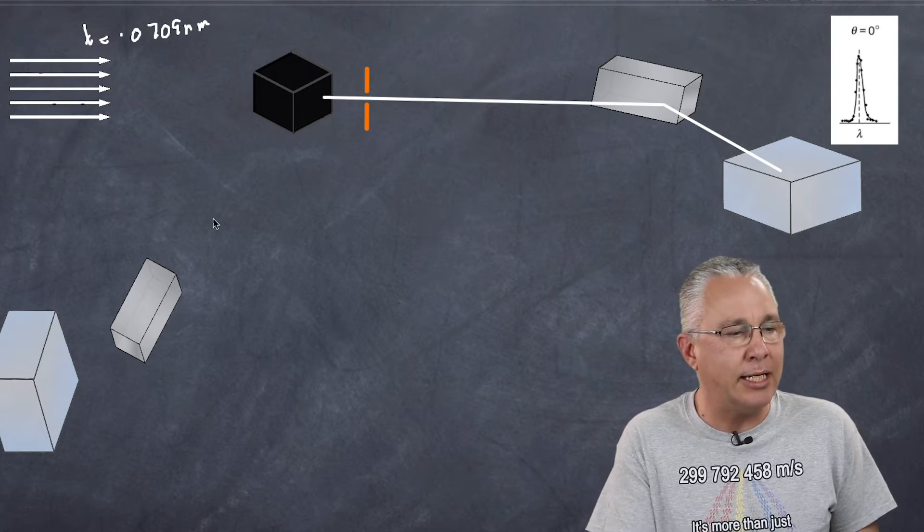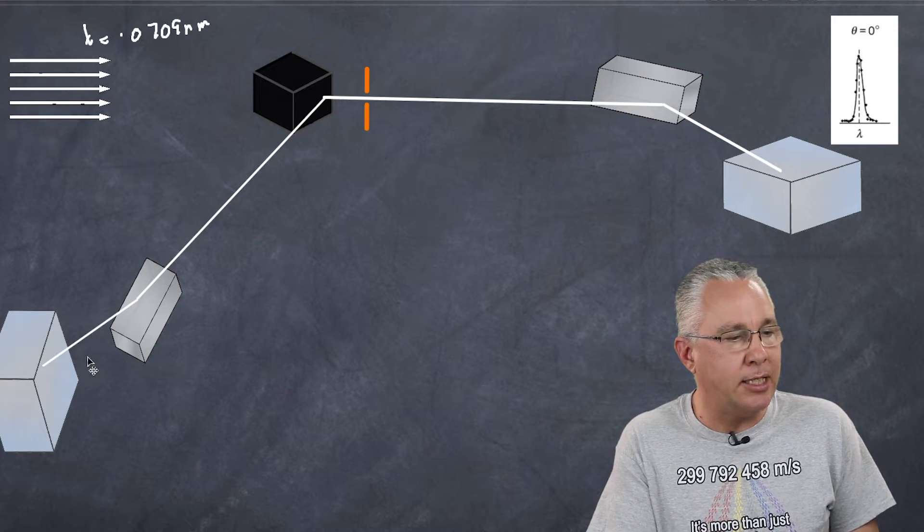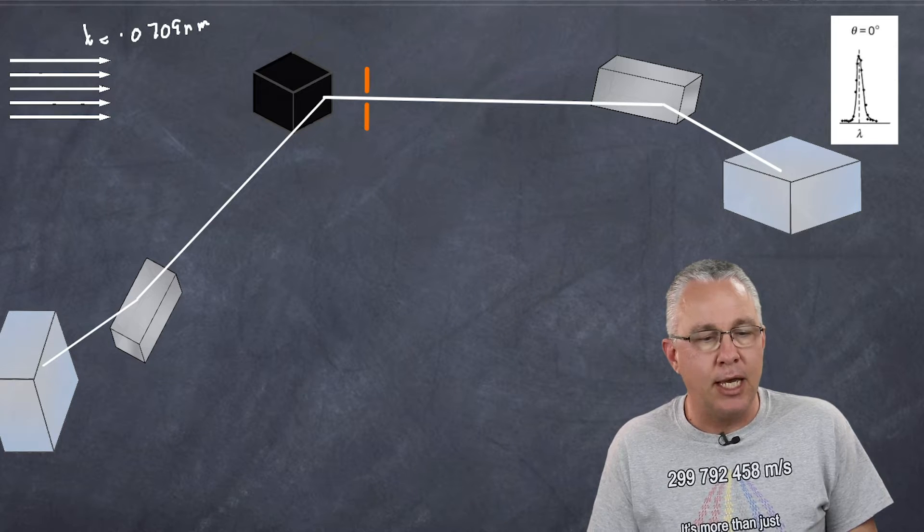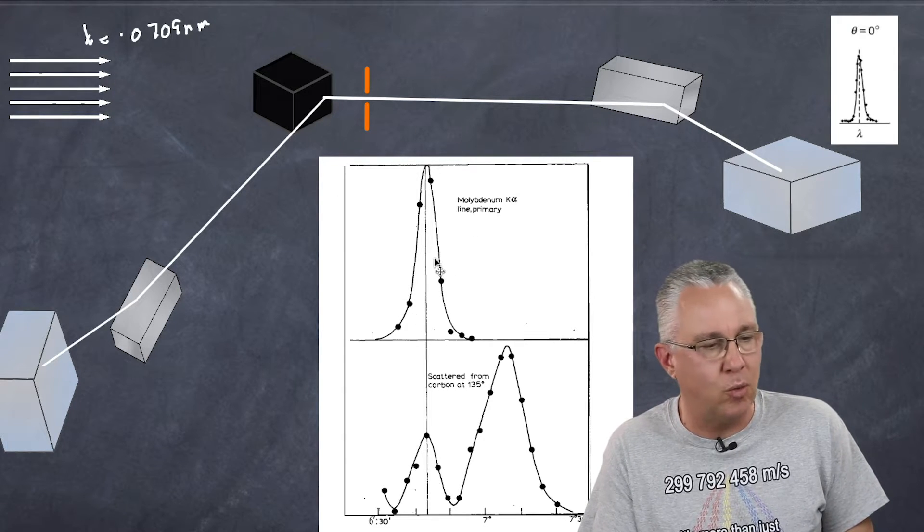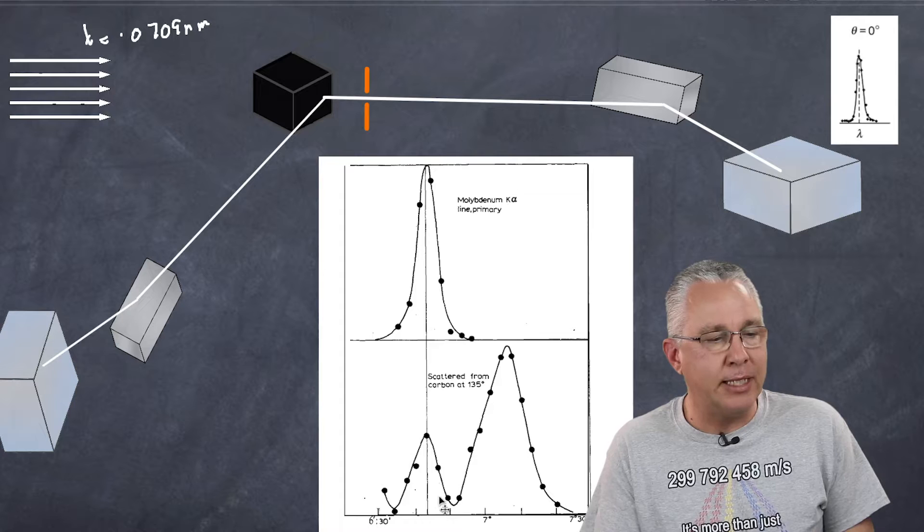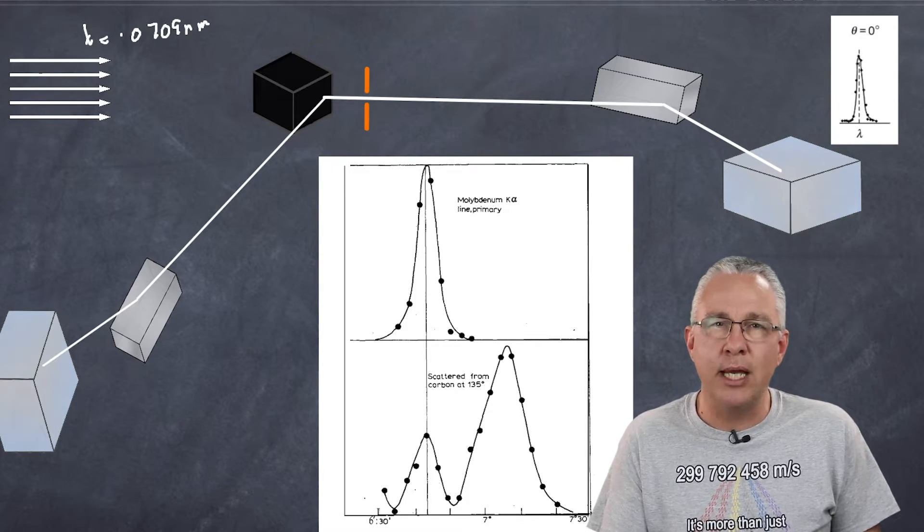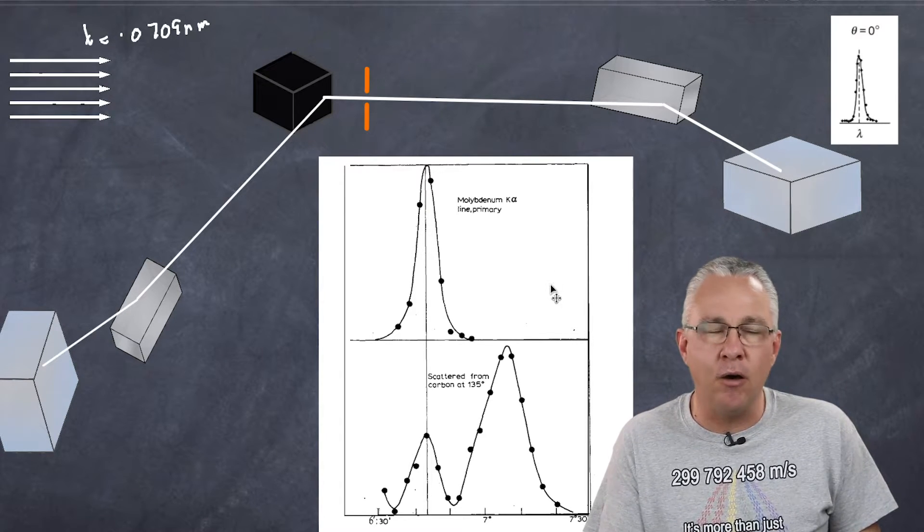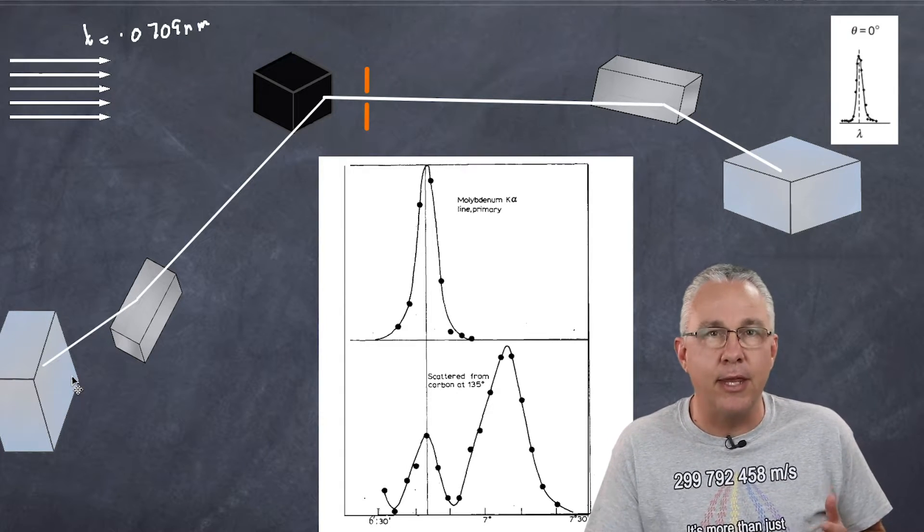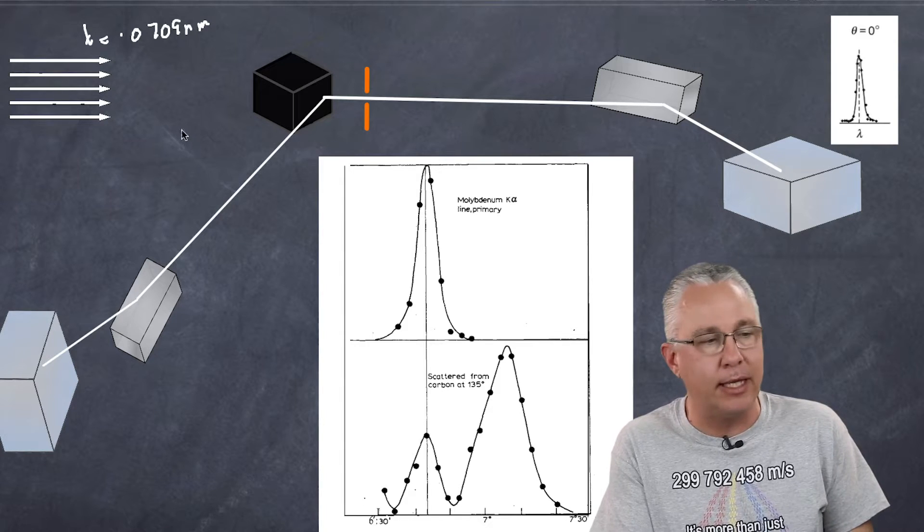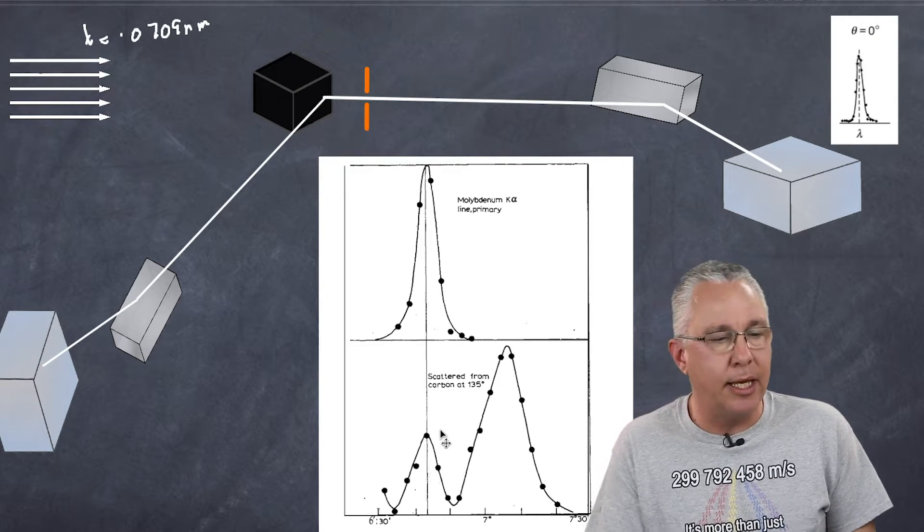But he noted that at a different angle, in this case at 135 degrees, he actually ends up getting a result that is markedly different. And the result he ends up getting looks like this. Now let me explain it to you. This first peak is our original wavelength. Our original wavelength is appearing here, but you now get this peak here further down. What he was able to show was that the majority of the X-rays that were coming and hitting this ionization chamber actually had a longer wavelength than the incoming wavelength. Now I'll explain why we get that little peak there in a moment.